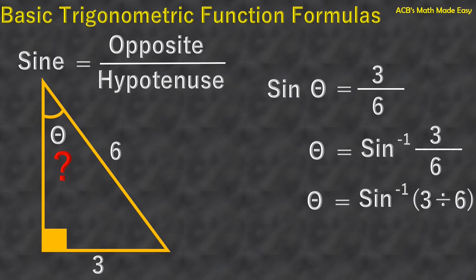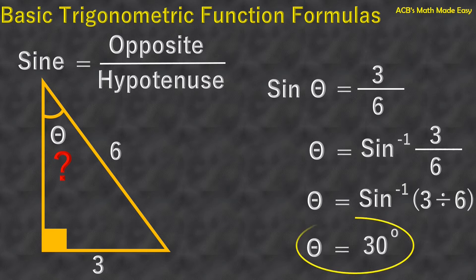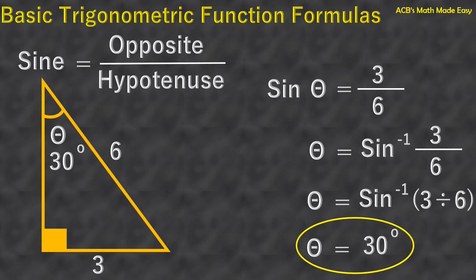So angle theta equals 30 degrees. This is the value of angle theta. I will show you how to use the scientific calculator, because a normal calculator doesn't have the trigonometric function — we need a scientific calculator.